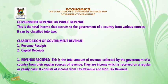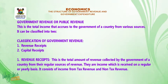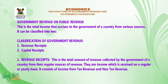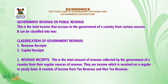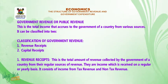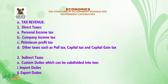Revenue receipts is the total amount of revenue collected by the government of a country from their regular sources of revenue — income which is received on a regular or yearly basis. It consists of income from tax revenue and non-tax revenue. We want to look at the items on the revenue receipts, specifically the items on the tax revenue.